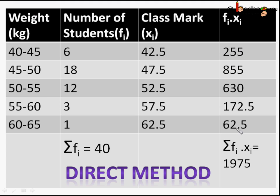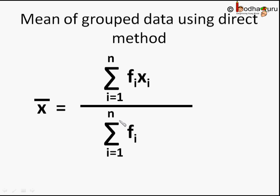Then we find product of frequency of that class and class mark, like 6 × 42.5 equals 255. And then we sum all the products of fixi, that entire column. We also calculate sum of all the frequencies, that is Σfi.